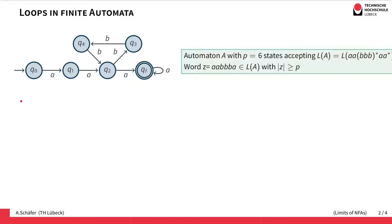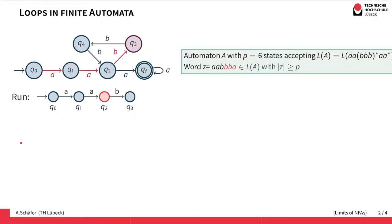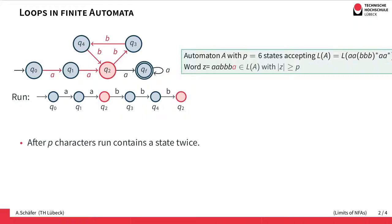Now we look at what happens when this automaton accepts a word that has at least as many letters as the automaton has states. We look at this word and construct the run for it. We start in the initial state, take the first A to Q1, another A to Q2, then enter the loop going to Q3, Q4, and then we encounter state Q2 again.